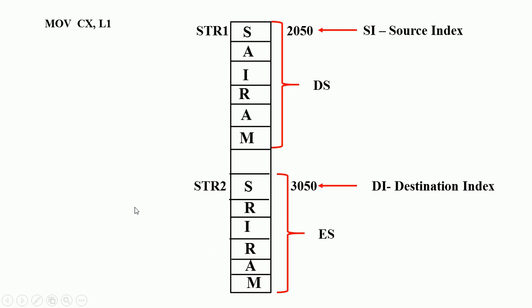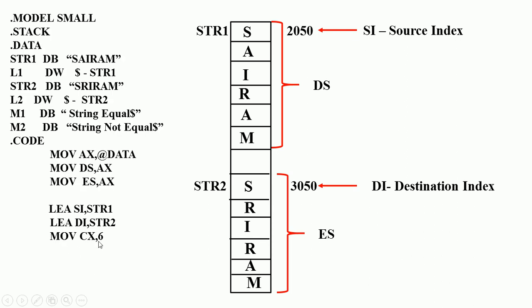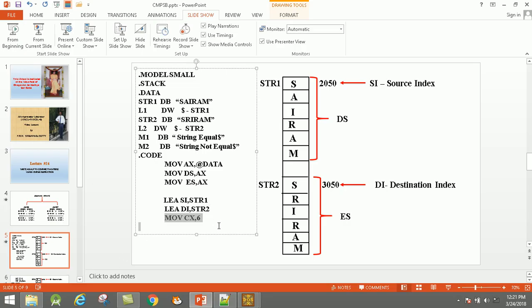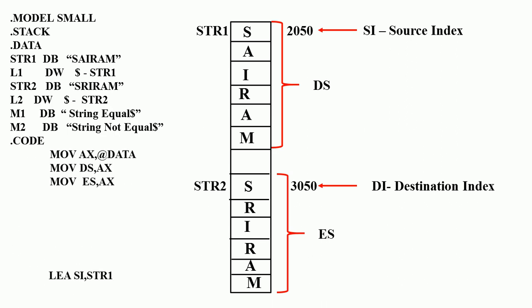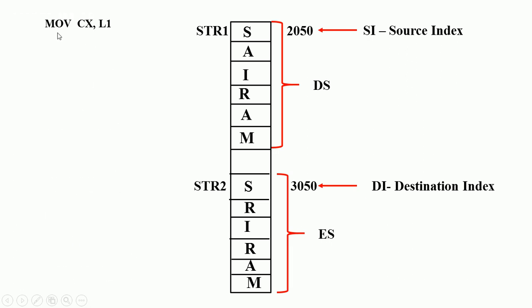Actually the move CX, 6 instruction is not required, so we remove it. Instead, we use move CX, L1. The length of string 1 is stored in L1, so we transfer the content of L1 to CX. Now CX becomes 6, the length of string 1.